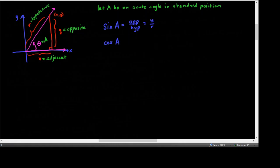Cosine will be adjacent over hypotenuse, which is X over R. Tangent is opposite over adjacent. For these first three, you may know the mnemonic SOH-CAH-TOA, which helps you remember: sine is opposite over hypotenuse, cosine is adjacent over hypotenuse, and tangent is opposite over adjacent.